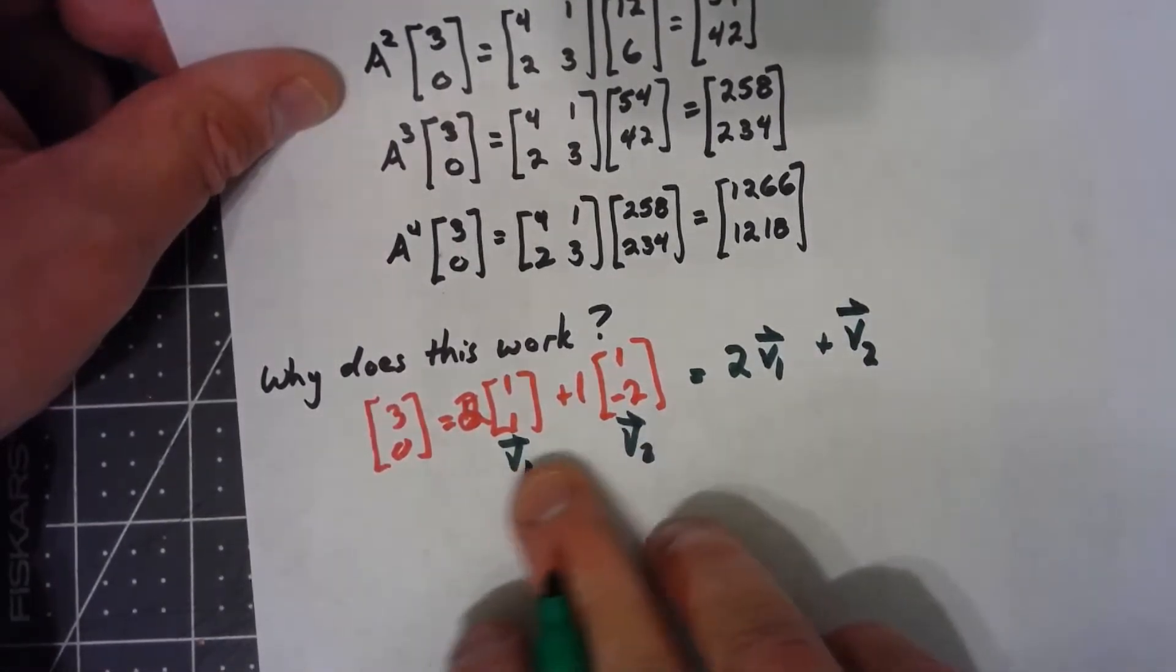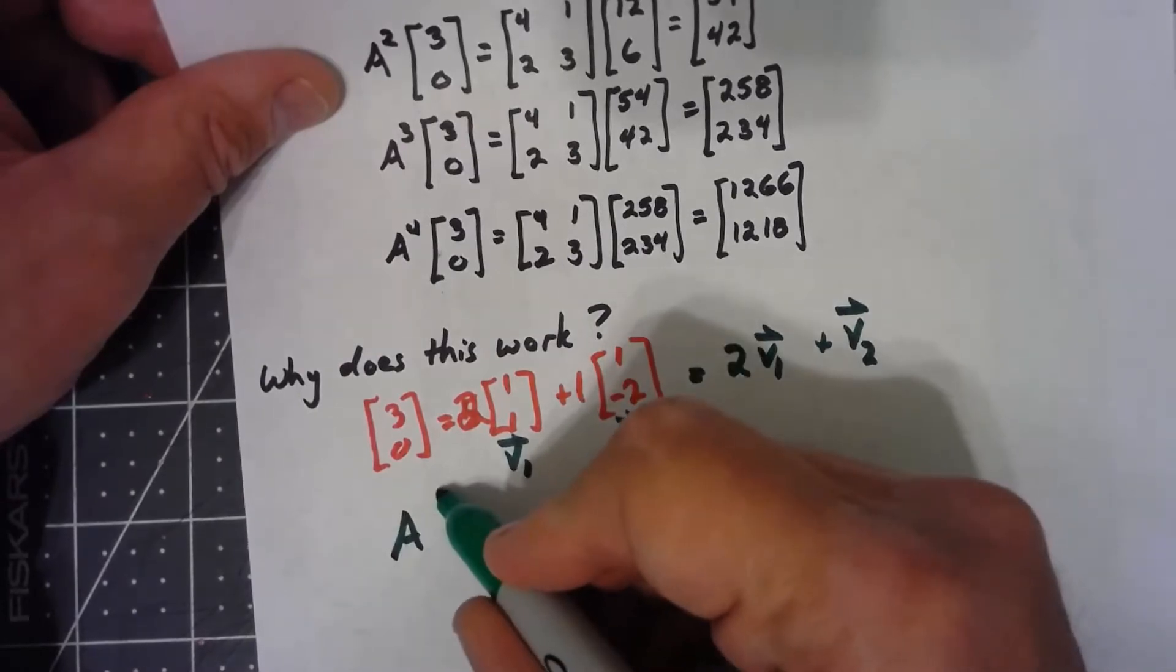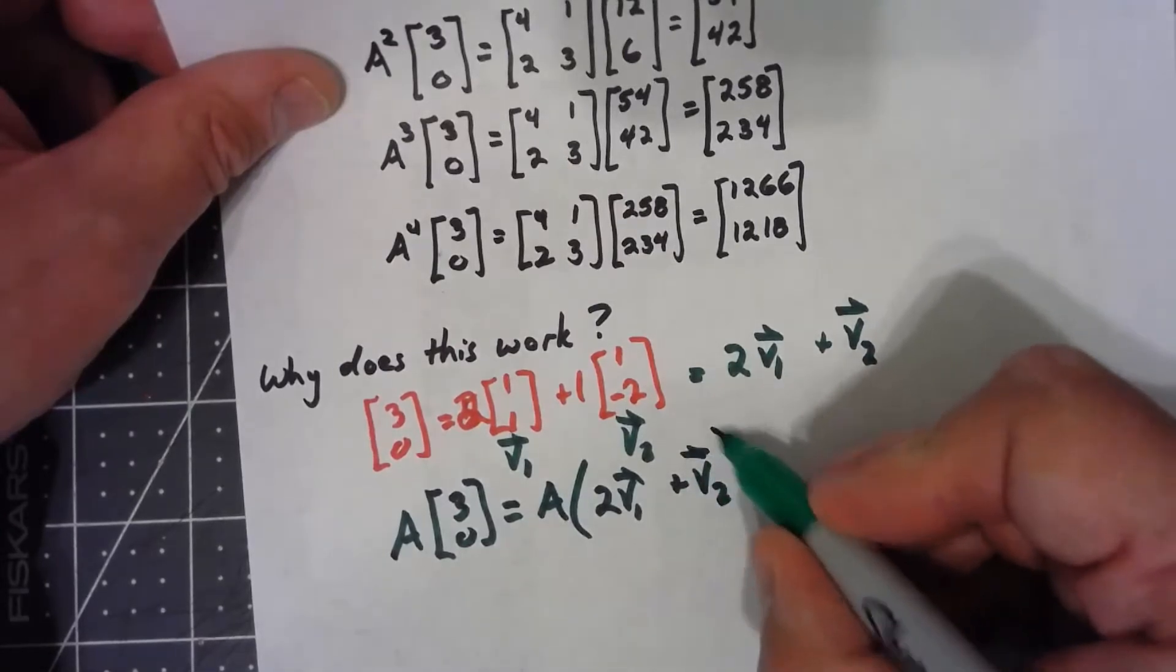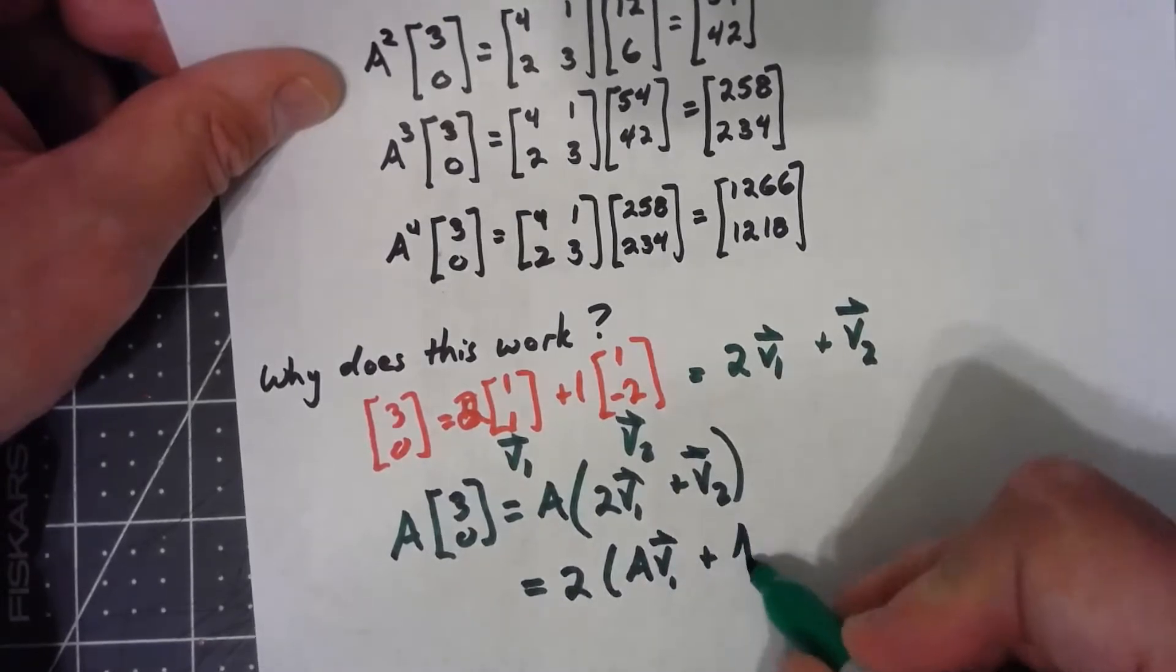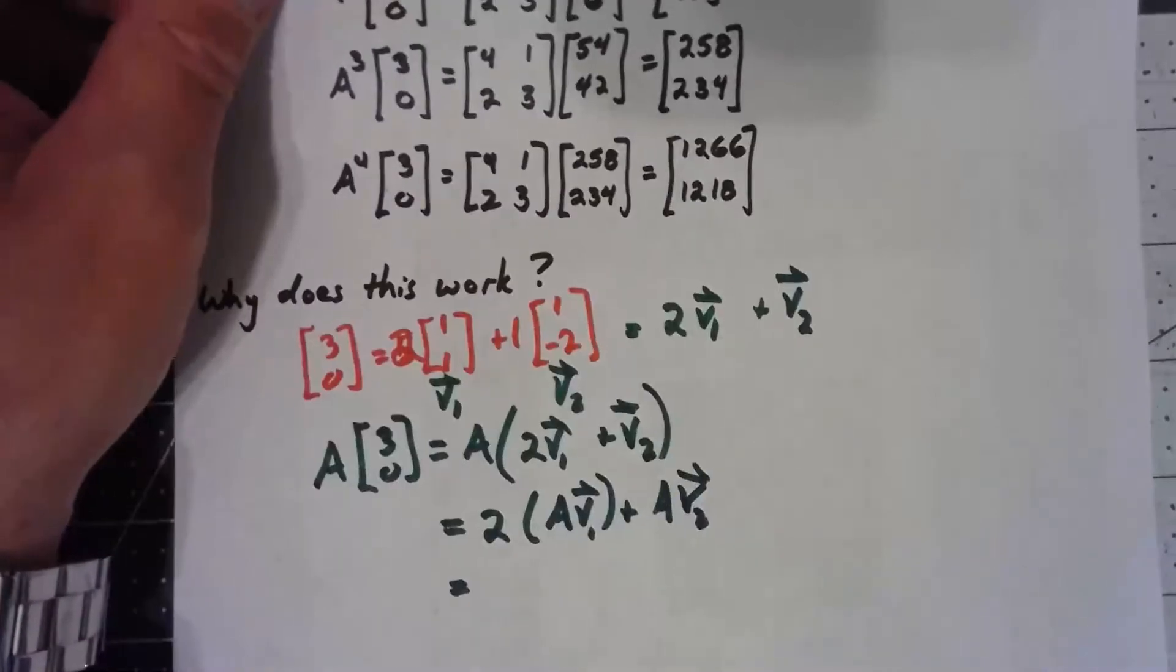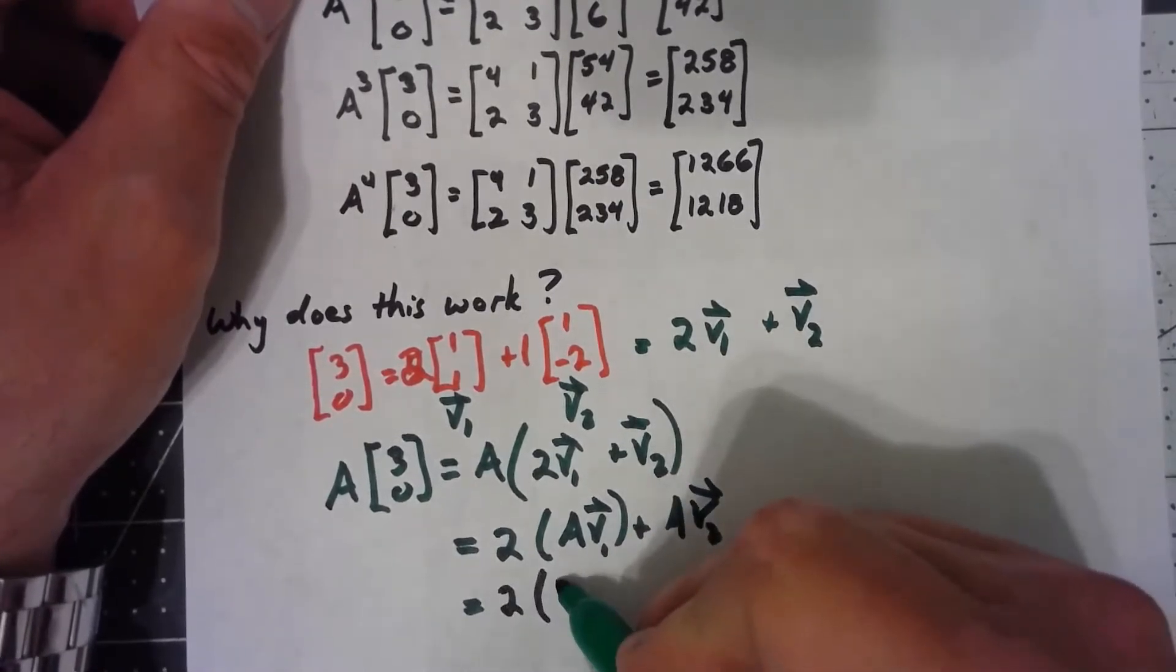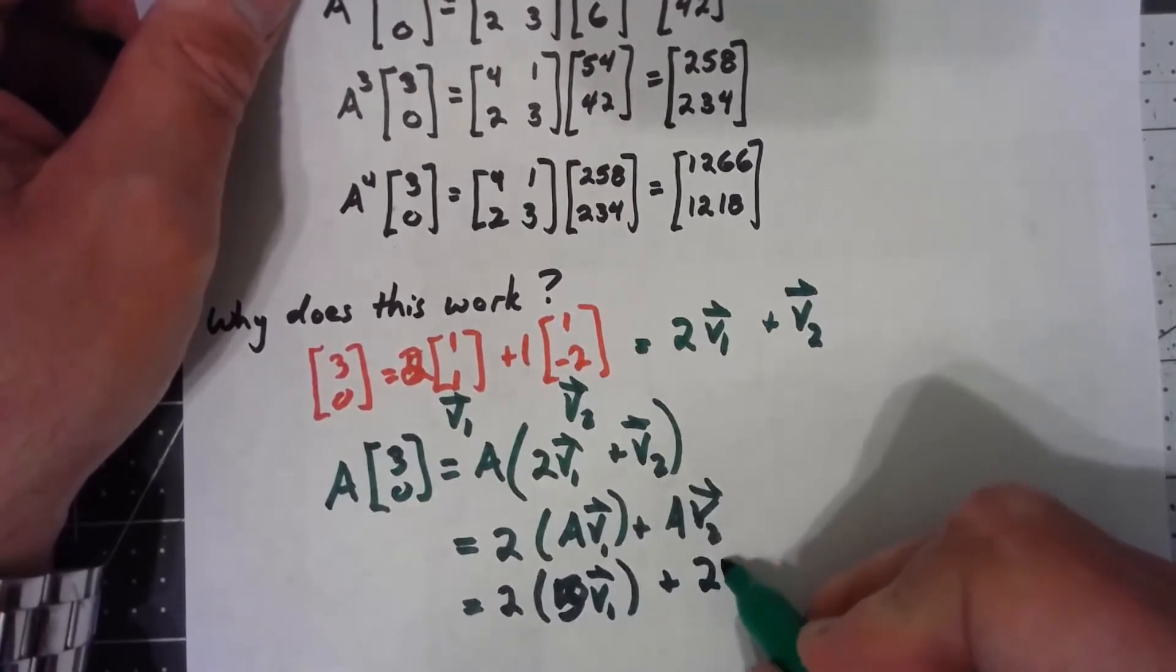And because these are the eigenvectors, when I multiply by the matrix A, when I take A times [3, 0], I'm getting A times the 2v1 plus v2. So I'm getting 2 times A times v1 plus A times v2. And these things were the eigenvectors. So multiplying here by A is the same as multiplying by 5. So I'm getting 2 times 5v1 plus 2v2.